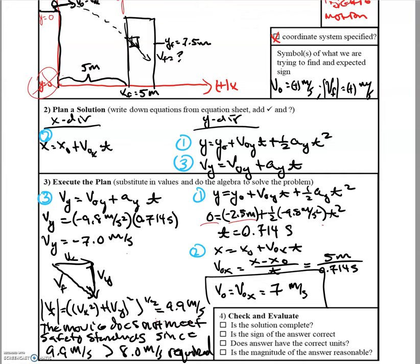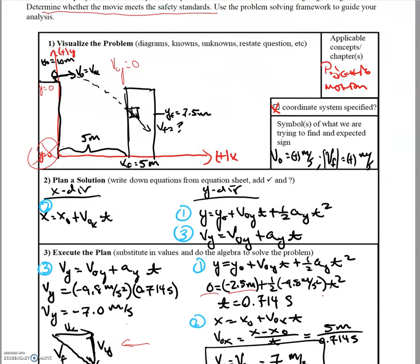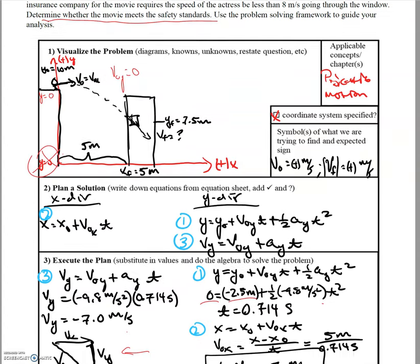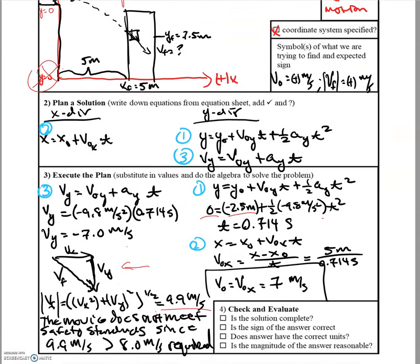To get the final velocity, the x-component stays constant at 7 meters per second. You then solve for the final velocity in the y-direction and use the Pythagorean theorem to combine them, finding a final speed of 9.9 meters per second. That is not your final answer — you need to address whether the movie meets the safety standards. Since 9.9 meters per second exceeds the required 8 meters per second limit, the movie does not meet the safety standards.